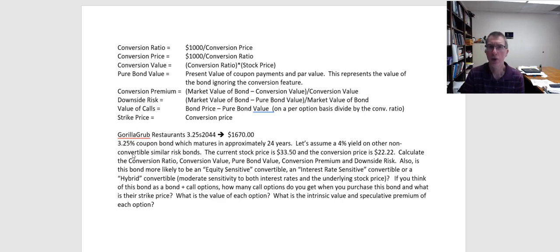In this video we're going to take a look at convertible bonds. A convertible bond is kind of a mix between a bond and a common stock. With a convertible bond you get some characteristics of a bond — you're typically going to get a coupon payment, although that coupon payment will typically be lower than on an ordinary bond. In many cases it might even be a zero-coupon convertible bond, which means it doesn't pay a coupon.